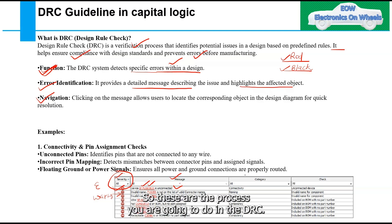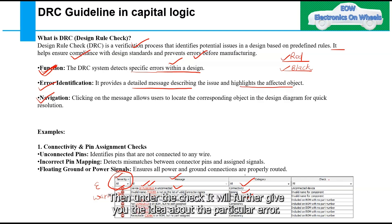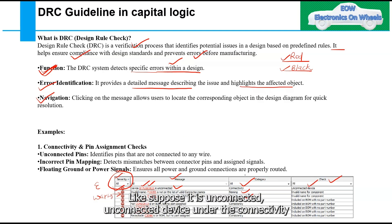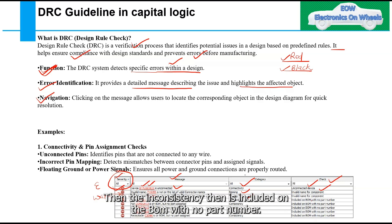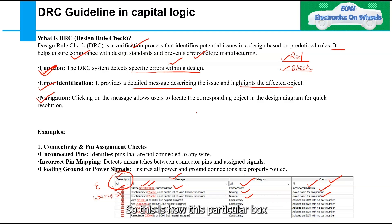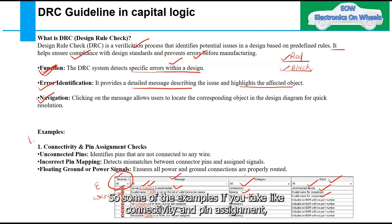The DRC report shows categories such as connectivity, naming, and consistency. Under each category, further checks are described — for example, 'unconnected device' under connectivity, 'invalid name of the component' under naming, and 'included on BOM with no part number' under inconsistency. This is how the DRC window pops up in Capital Logic and describes the problem.